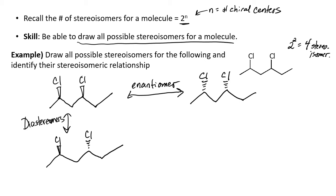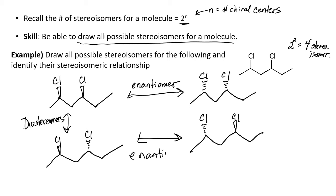These two are diastereomers and they are not mirror images. Now let's take the diastereomer we just drew and draw its enantiomer. To draw an enantiomer, we turn all wedges to dashes and all dashes to wedges. The first stereocenter was a wedge — make it a dash. The second was a dash — make it a wedge. Those are enantiomers. What is the relationship between the original starting compound and this last one? We didn't flip both stereocenters — one is the same and the other flipped — so those are diastereomers.